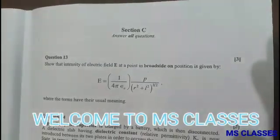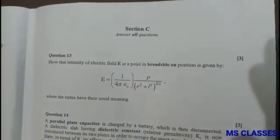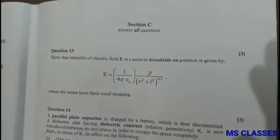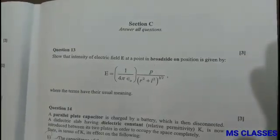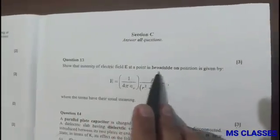Hello students, welcome to MS Classes. Today we will discuss Section C and Section D of ISC 2020 Physics board paper. Let's start with Question 13: Show that intensity of electric field E at a point on the broadside position is given by this.